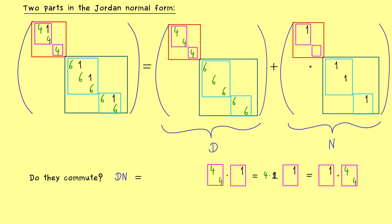And obviously, this works for every other Jordan box as well, because the form of the Jordan box is always the same. So in total, we immediately get, that D times N is the same as N times D. So the result is, both matrices commute.